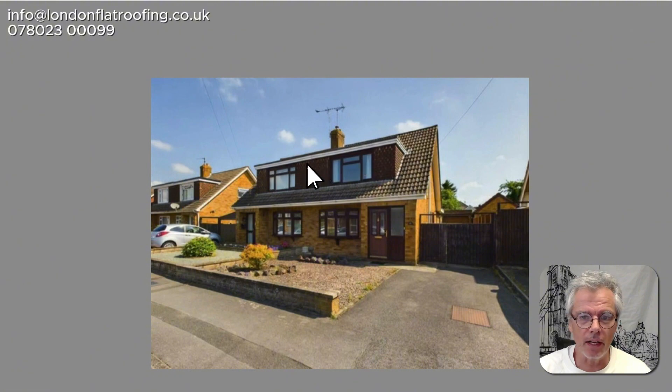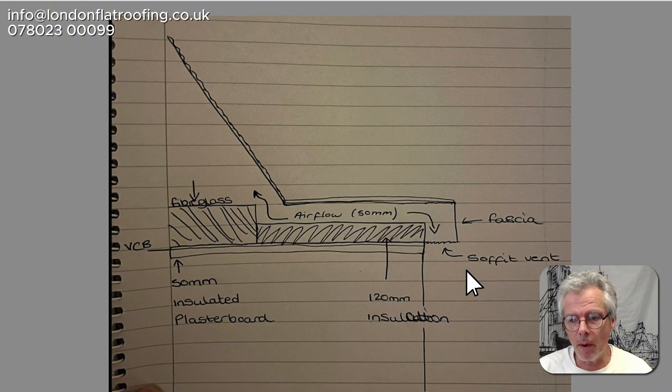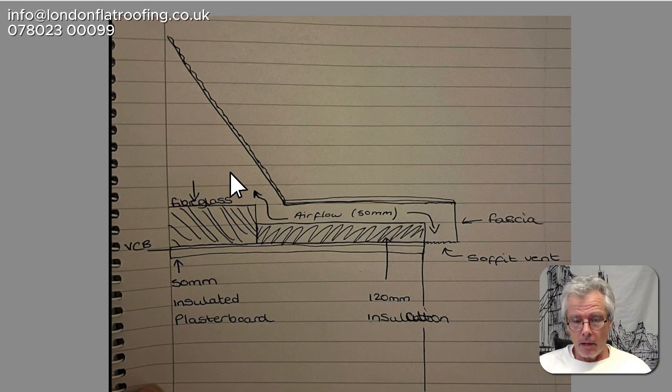She's proposing doing this: putting on soffit vents to get a flow of air around and up inside, and she's asking if I think that's okay. Well, generally speaking, we don't like to join the airflow of this roof to the air in this area here.